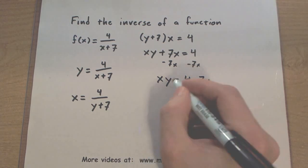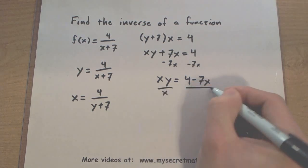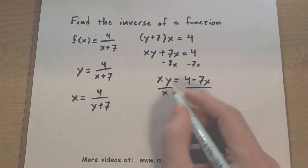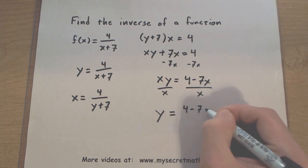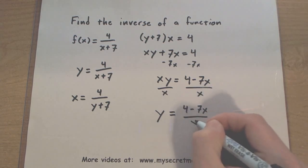One last step. To get y all alone, looks like we'll have to divide by x on both sides. This will give us y is equal to 4 minus 7x all over x.